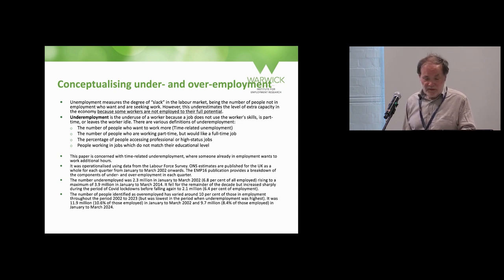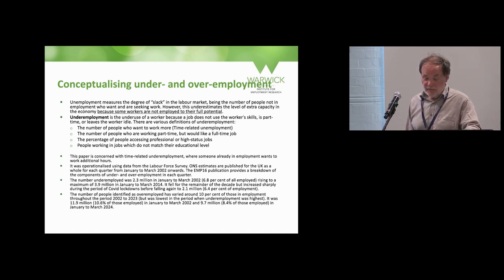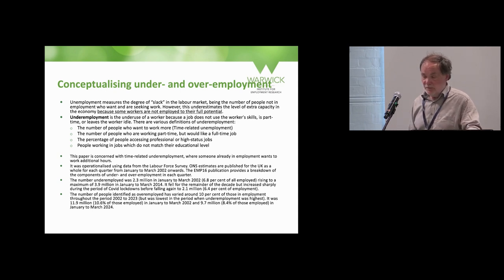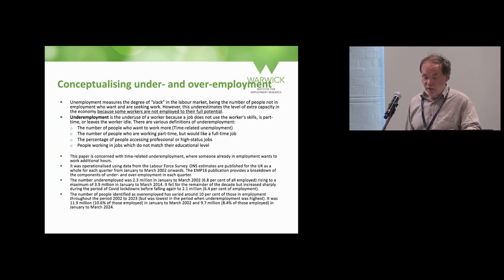The indicators are generated using data from the LFS for the January to March 2002 quarter onwards until the same quarter of this year. The M16 publication from ONS shows how these indicators are created from the individual variables in the LFS and shows the various components of underemployment — showing the number of people who want more work and are working more than they want to work.